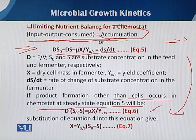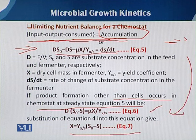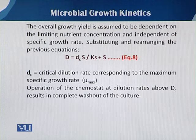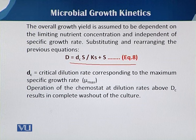Equation 6 states that D·(s₀ − s) equals μ_max over Y_x/s. By substituting equation 4 into equation 6, we obtain an expression for x equal to Y_x/s times (s₀ minus s). When growth yield is dependent on the limiting nutrient concentration, rearranging the previous equation gives us a simple reshaping of the Monod equation.